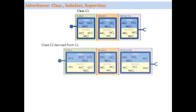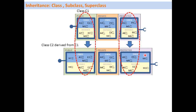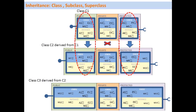Let's look at how inheritance works. Say we have class C1 and another class C2 derived from C1. Class C2 inherits all components from the public and protected sections of class C1 — this is called inheritance. C1 is the superclass and C2 is the subclass. As you can see, all attributes, methods, and events from the public and protected sections are inherited. The private components are not inherited at all. Class C2 can also have its own additional components.